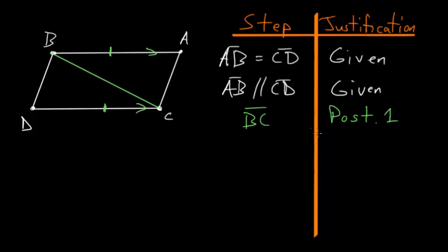And then from here, we want to use Book 1, Proposition number 29, which essentially concerns the angles of parallel lines that are cut by a transversal. So we know that AB and CD are parallel, and they're cut by this transversal BC, so we know that this angle here and this angle here are equal to each other, since they're alternate angles. So angle ABC is equal to angle DCB.